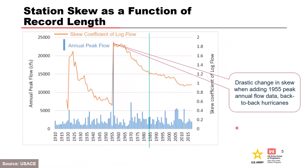Let's look at station skew as a function of record length — the skew calculated just from your site, informed by your watershed above your gauge. This figure shows an example of re-estimates of at-site skew as each year is added to the record, showing that skew is extremely volatile. The blue bars are the magnitude of peak flow for each year, and the orange curve plots how skew changes with each additional year of data. We can see a really large increase in 1955 due to back-to-back hurricane events — skew went from around 0.6 all the way up to almost two. So if you get a big flood, it absolutely can change your results.